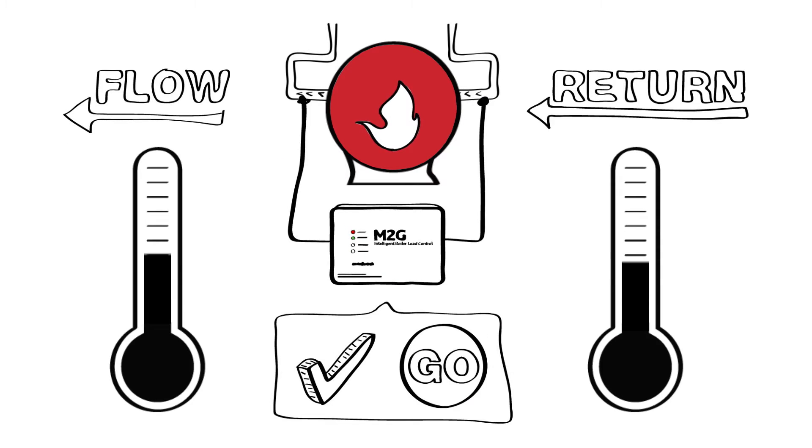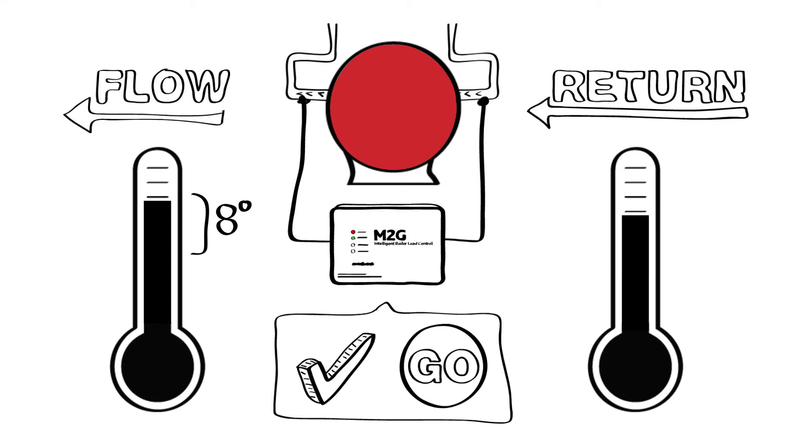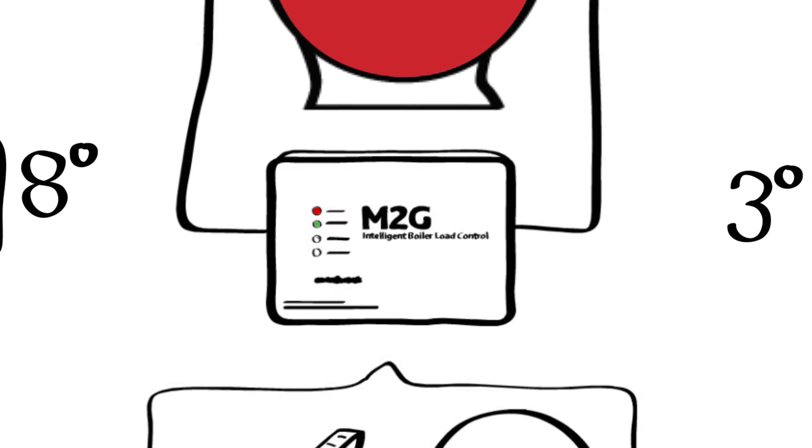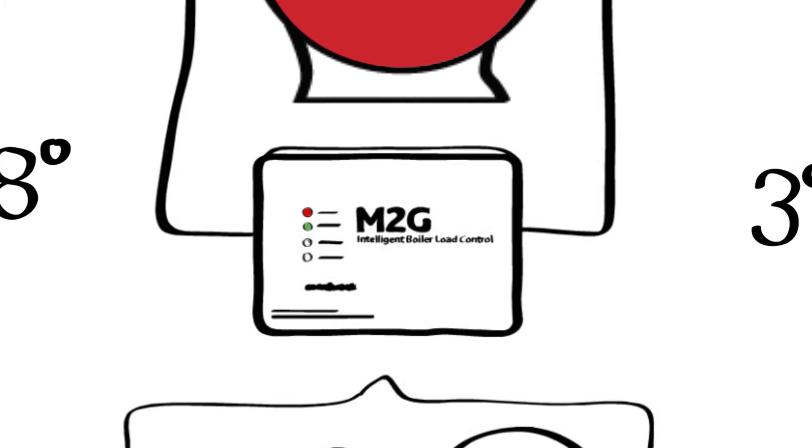As the boiler reaches its required temperature, M2G takes a snapshot reading of the flow and return. From these readings, M2G applies an 8 degrees dead band on the flow and a 3 degrees dead band on the return. Once the building has reached the desired temperature and the initial snapshot of the flow and return has been taken, the M2G then takes these readings every second and analyzes this data every 10 seconds.